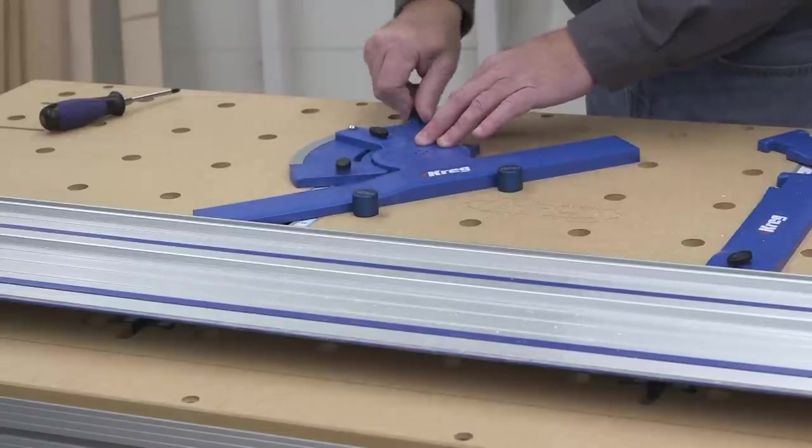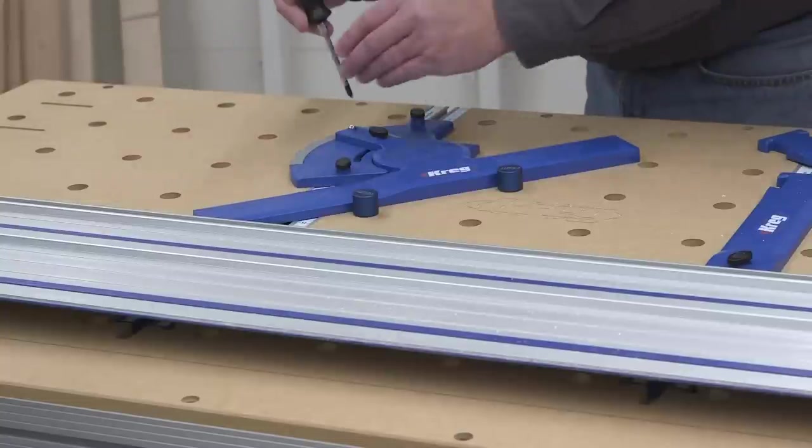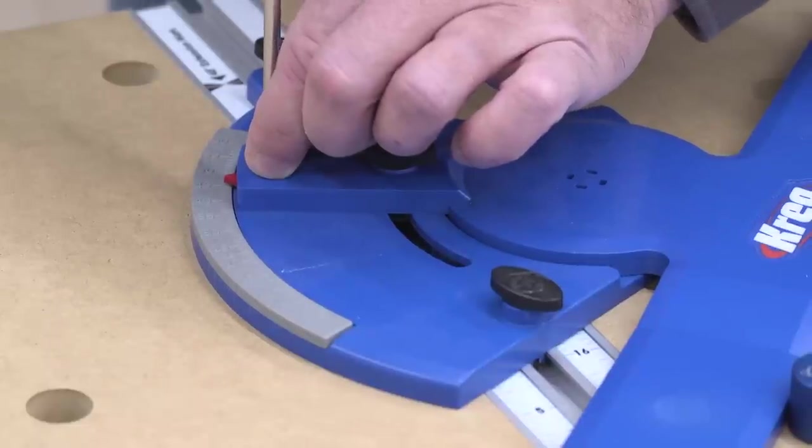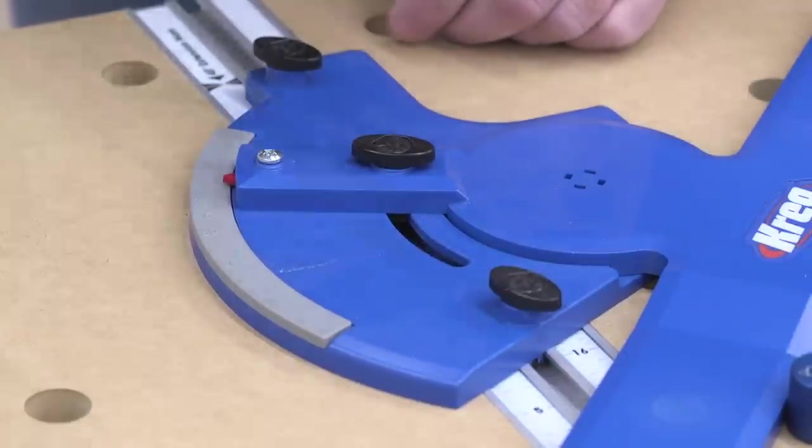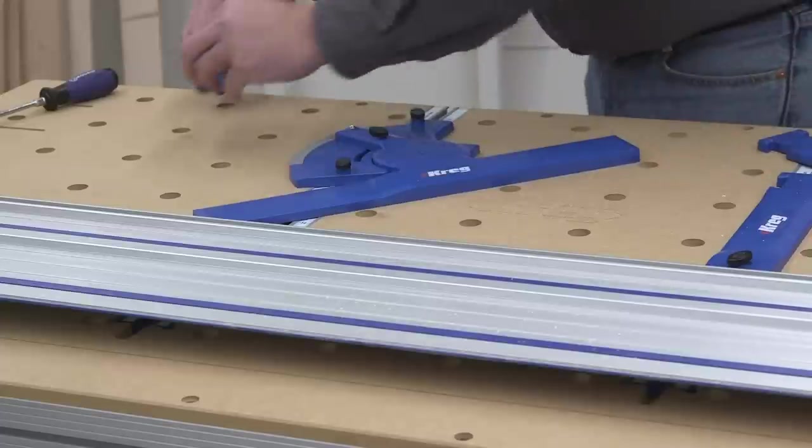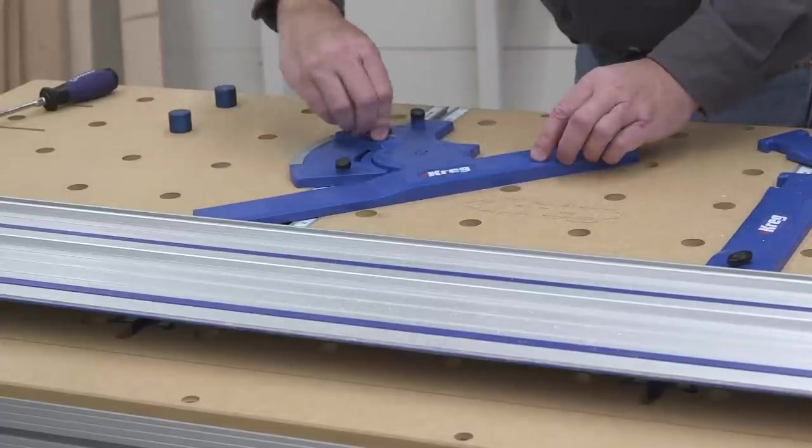Slide the miter guide against the stops, lock down the knobs, and then position the indicator so it aligns exactly with the 45 degree mark. Once it's calibrated at 45 degrees, the miter guide will be accurate for every angle shown on its scale.